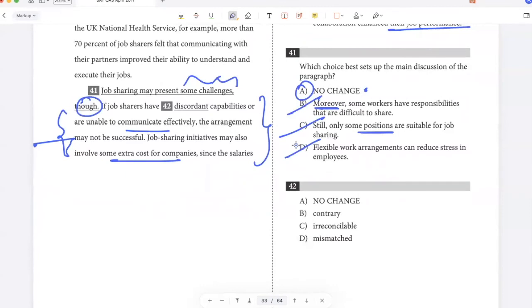If job sharers have discordant capabilities or are unable to communicate effectively. So basically, I'm saying that the arrangement may not work if the capabilities of the job sharers don't match. So I think mismatched is the best answer for this. Discordant will not fit this context because it comes from the word discord, which is to indicate conflict. And capabilities can't really be in conflict. They can be mismatched. Again, I don't think contrary can be used for capabilities. And irreconcilable is also an extreme word for something like capabilities, because you don't really need to reconcile capabilities. Capabilities either go together or they don't. So mismatched is the best answer.